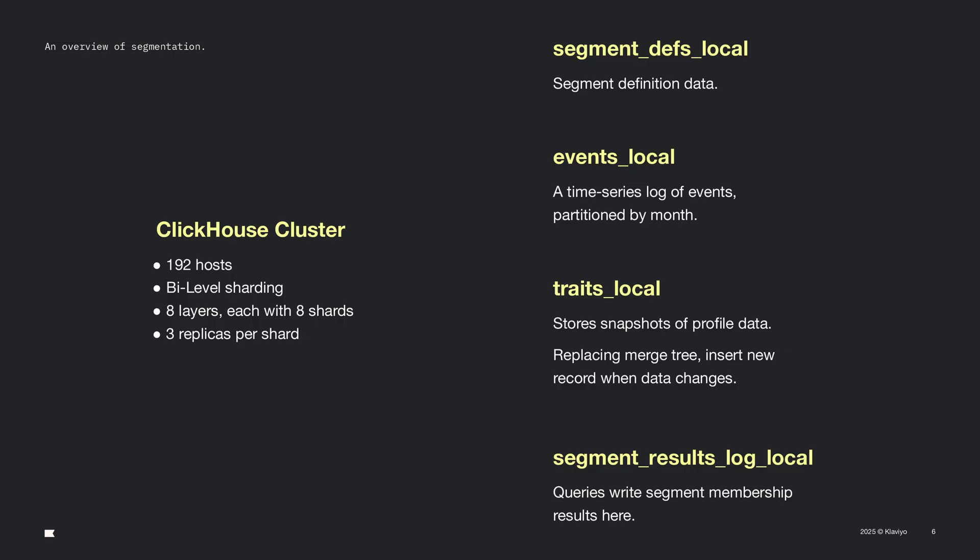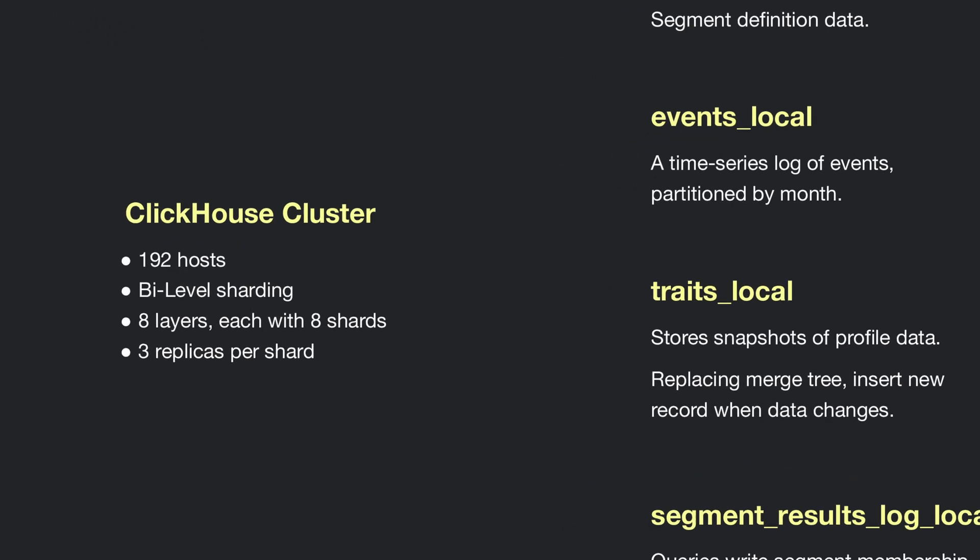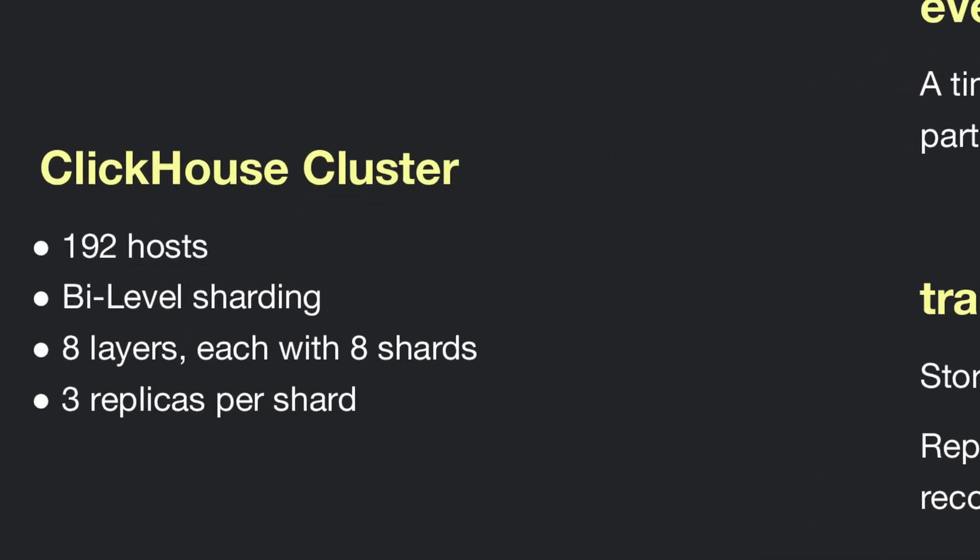Today, Klaviyo's segmentation engine runs on a 192-node ClickHouse cluster. Data is sharded twice — first by company, and then by customer profile. That design isolates each customer's data while also distributing the data across nodes to enable parallel query execution, resulting in reduced query times.